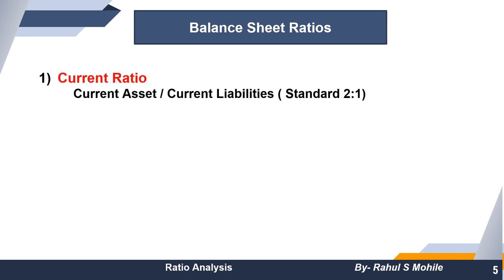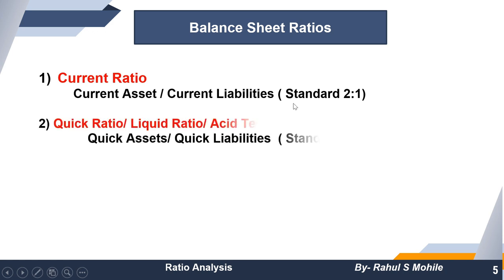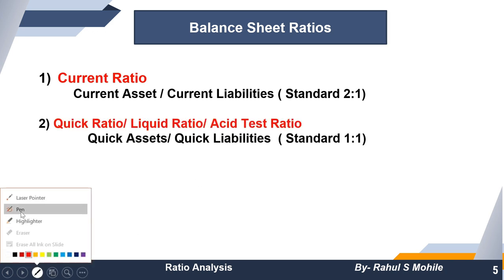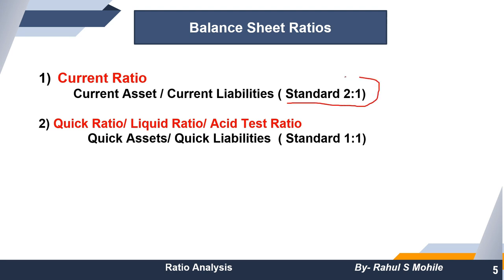The first balance sheet ratio is the current ratio — the formula is current assets divided by current liabilities. An important point here is the standard: the standard for current ratio is 2:1. The examiner can ask for the standard, or give current assets and ask you to calculate current liabilities, so your formula must be very clear.